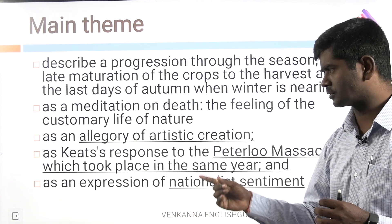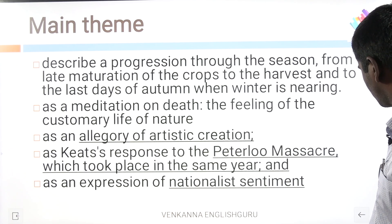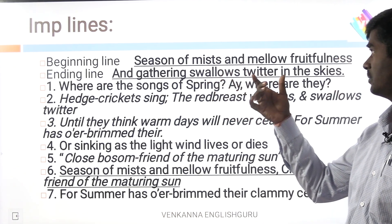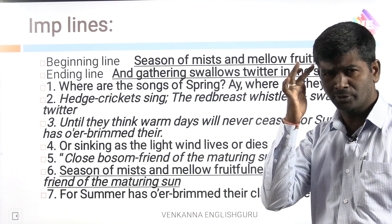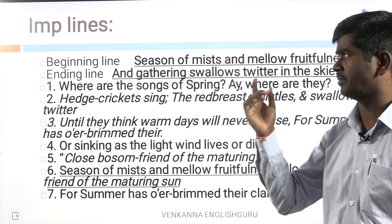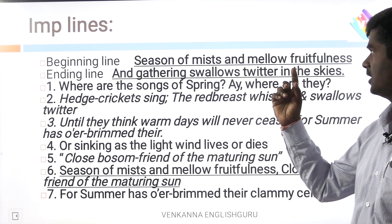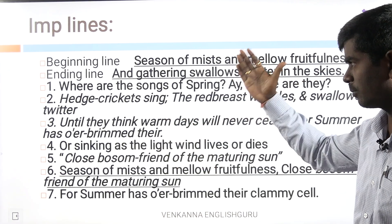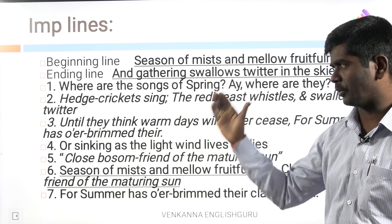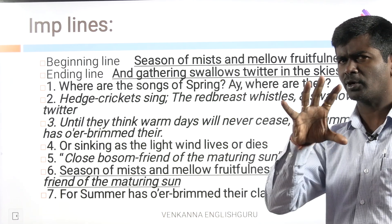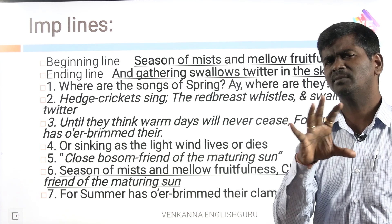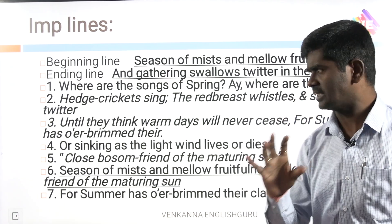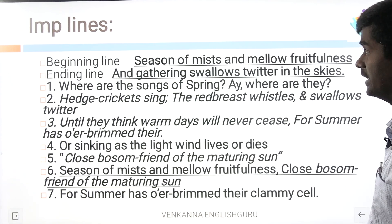This poem also talks about an expression of nationalistic sentiment. What is the beginning line of the poem? 'Season of mists and mellow fruitfulness' — you need to remember this beginning line. And the ending line: 'And gathering swallows twitter in the skies.' The important lines of the poem feature several times in NTA, UGC NET, and JL/DL examinations — you need to be thorough with that.